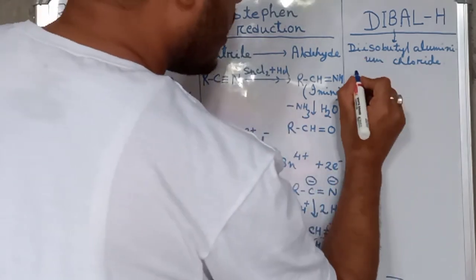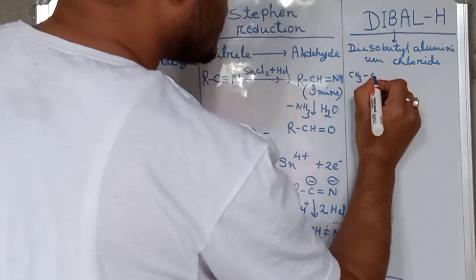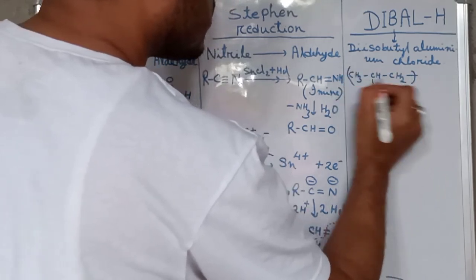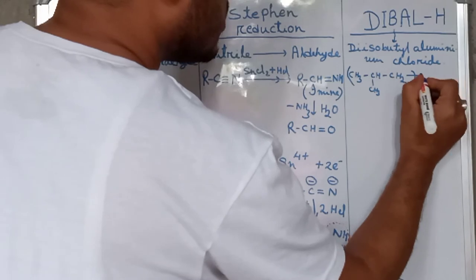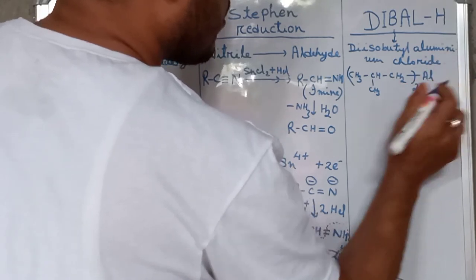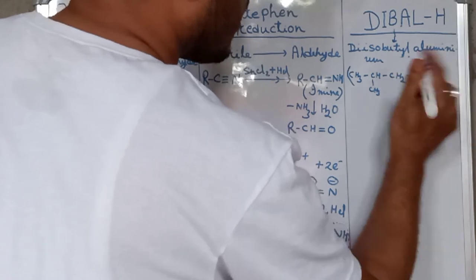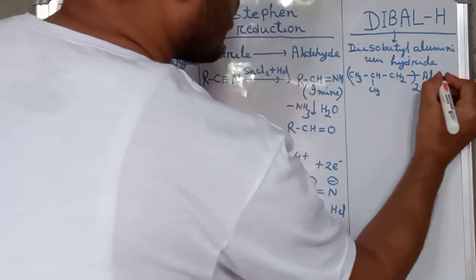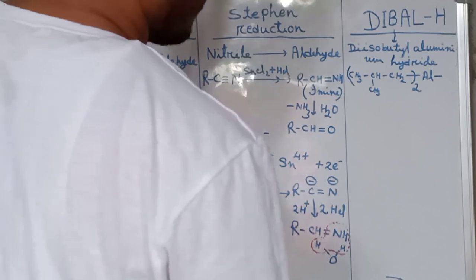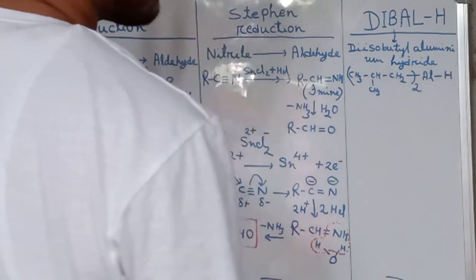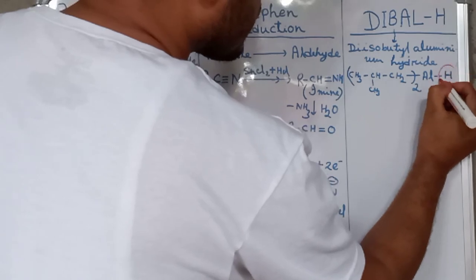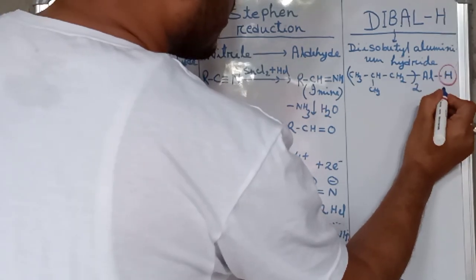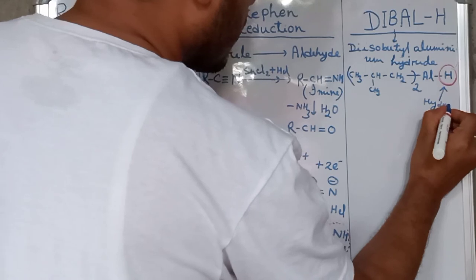See the structure. Isobutyl means (CH3)2CH-CH2, and di means 2, so it's [(CH3)2CH-CH2]2Al-H. It is not chloride, it is hydride, meaning H-. So after aluminum it is H: diisobutyl aluminum hydride. From this molecule we get hydride ion H-.